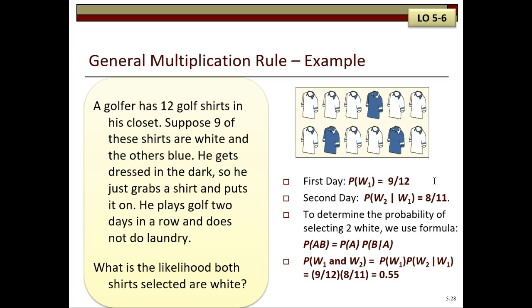So to determine the probability of selecting 2 white shirts, we're going to use this formula here, the probability of A times B. So we're going to take the probability of getting the white shirt on the first day, 9 out of 12, times 8 out of 11. And it's .55, so there's a 55% chance of selecting 2 white shirts in a row.